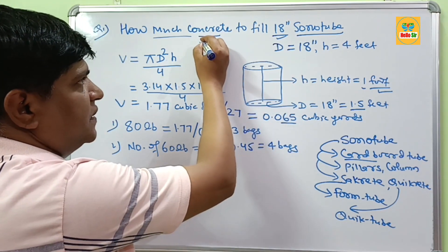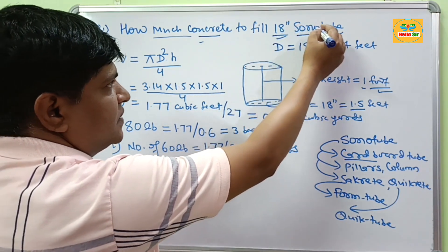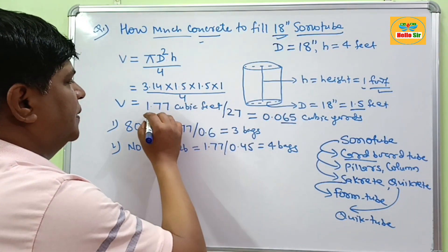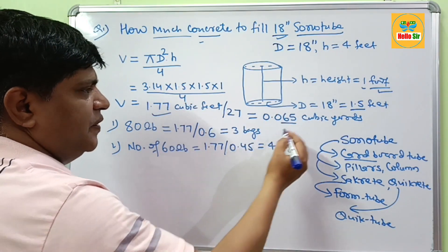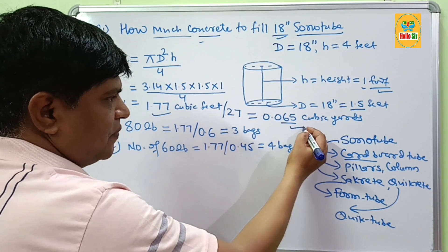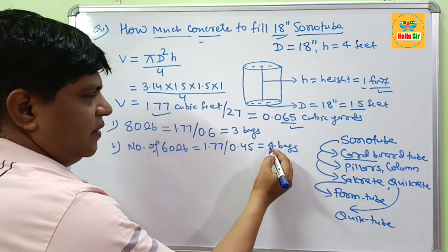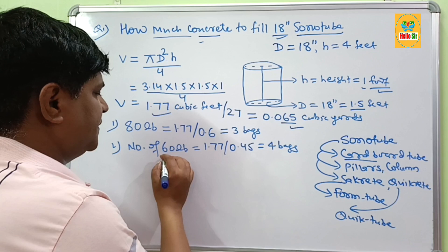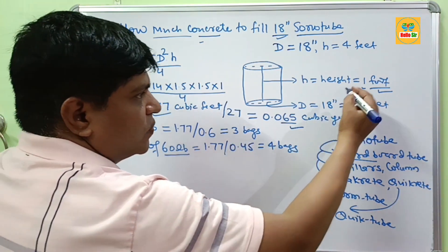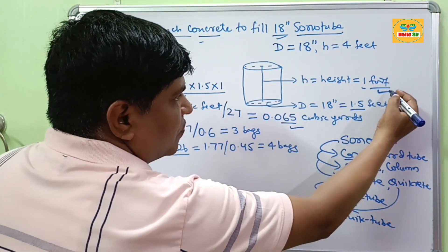It means how much concrete is required to fill 18 inch sonotubes? 1.77 cubic feet, 0.065 cubic yards, 3 bags of 80 lb or 4 bags of 60 lb concrete for 1 foot height.